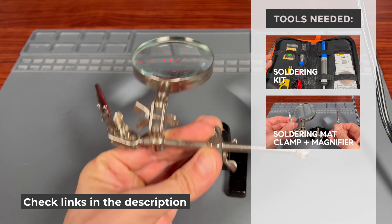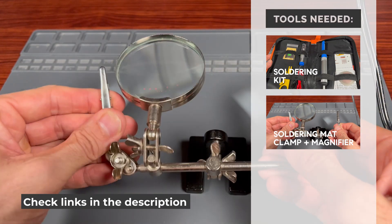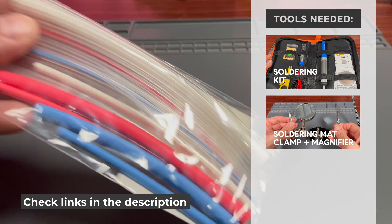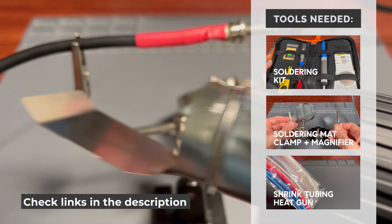A clamp and magnifying glass serving as a very helpful pair of extra hands and eyes. Shrink tubing will help you secure and keep it tightly together.